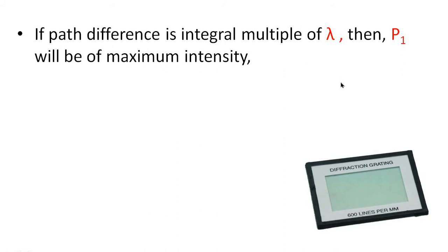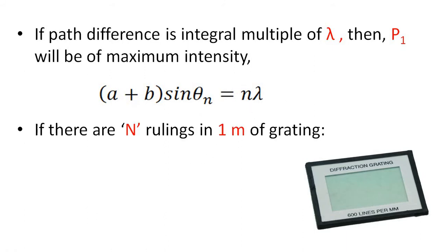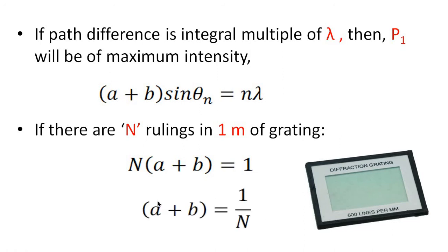If the path difference is an integral multiple of lambda, then P1 will be of maximum intensity. That is, (a + b) sin theta = n lambda. If there are N rulings in 1 meter of grating, then N times (a + b) equals 1, or (a + b) equals 1 by N.